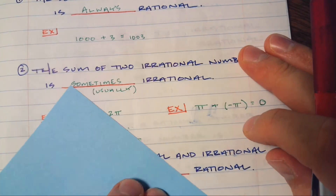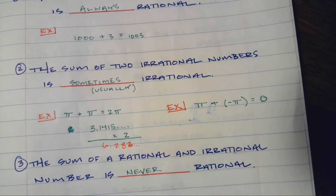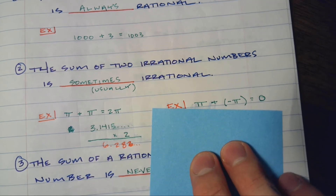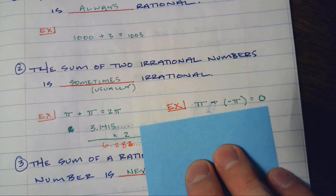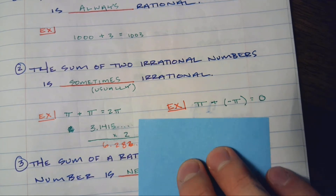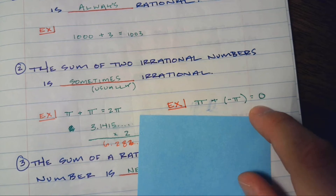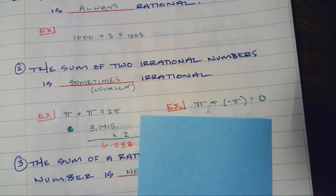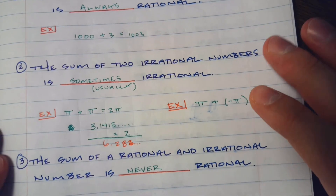But there is one interesting case here. This one is actually going to be sometimes — usually irrational, actually. If you take a number — any number — and you subtract it from itself, it's going to be 0. And 0 is a rational number. So even irrational numbers like pi, if you subtract it from itself, it's going to be 0. Same thing happens with √2, √5 — all those irrational numbers we've been talking about.